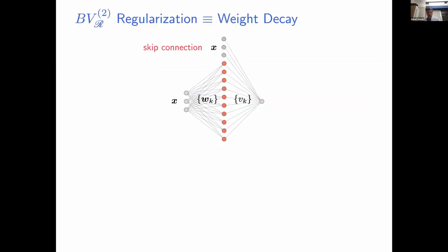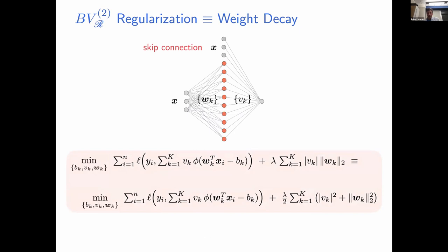A neural network in this setting has input and output layer weights plus a skip connection — the input feeding directly into the output summing neuron. The BV-Radon norm is equivalent to the path norm, so the optimization can be recast as a parametric optimization over neural network weights using path norm — equivalent to weight decay or ridge regularization. This equivalence holds because the magnitude of input layer weights can be factored out of the ReLU neuron, allowing rescaling without changing the function.